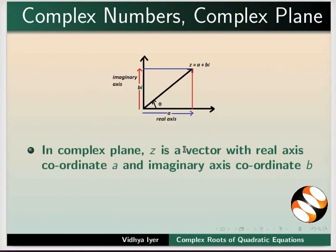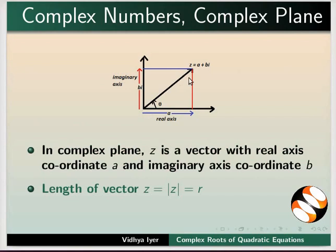In complex plane, z is a vector. Its real axis coordinate is a and imaginary axis coordinate is b. The length of the vector z is equal to the absolute value of z and to r.